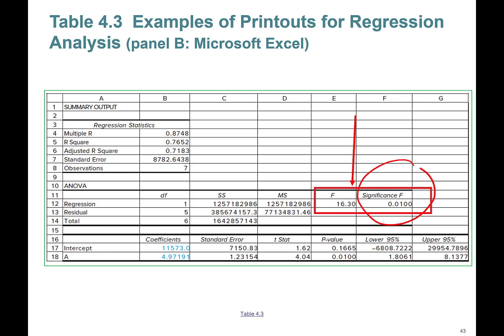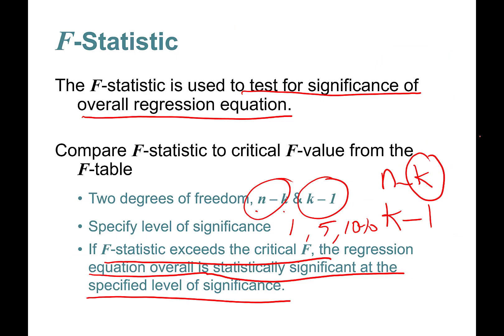There is an easier way to find it. Right here, significance F gives you the exact level of significance. It's statistically significant at 0.01, in other words 1 percent level. This is an easy way to utilize the Excel output. Based on this Excel output you can say that the overall regression equation is statistically significant at 1 percent level.